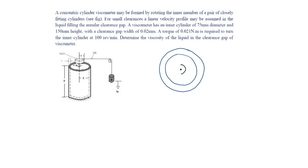Given that the inner cylinder rotates with an angular velocity omega and the gap is given as delta which is 0.02 mm, and the diameter of the inner cylinder is given as 75 mm. H is given as 150 mm and the omega is given as 100 revolutions per minute, converting it into radians per second.